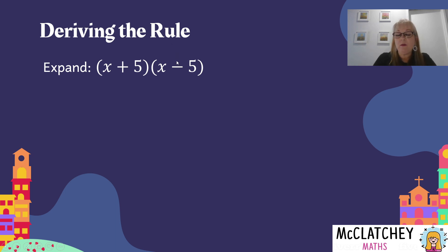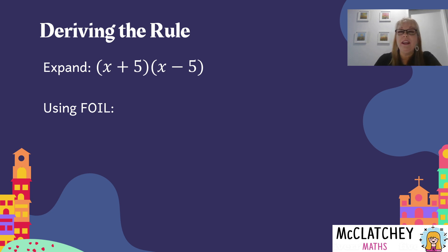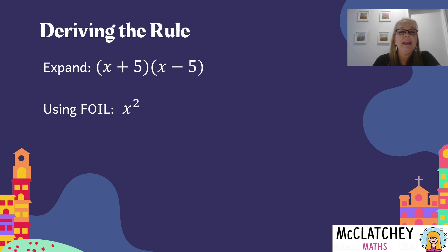Now let's see what happens when we expand using FOIL. If you're not sure how to expand using FOIL, go and watch one of our previous videos on expanding binomial products, or double brackets as it's also called. F stands for firsts — that's our first term in each set of brackets — x times x makes x squared.